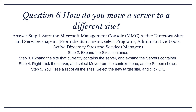Question 6: How do you move a server to a different site? Answer: Step 1 — Start the Microsoft Management Console Active Directory Sites and Services snap-in. From the Start menu, select Programs, Administrative Tools, Active Directory Sites and Services Manager. Step 2 — Expand the Sites container. Step 3 — Expand the site that currently contains the server and expand the server's container. Step 4 — Right-click the server and select Move from the context menu, as the screen shows. Step 5 — You'll see a list of all the sites. Select the new target site and click OK.